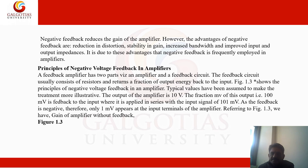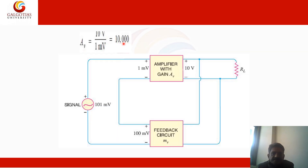The feedback circuit usually consists of resistors and returns a fraction of the output energy back to the input. To illustrate the principle of negative feedback, consider typical values: the amplifier output is 10 volts, a fraction of this output — 100 millivolts — is fed back to the input where it is combined in series with the input signal, giving 101 millivolts. The gain is 10 volts upon 1 millivolt.